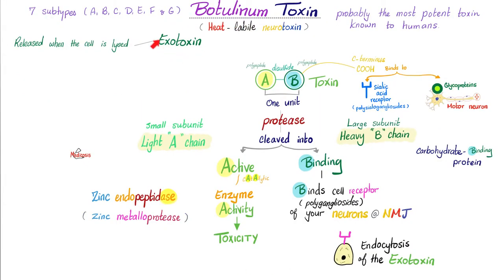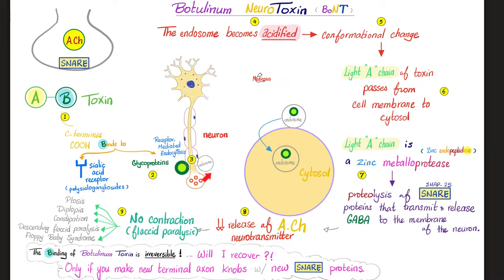Botulinum toxin is an exotoxin — a classic A-B toxin. The A subunit is active and has enzyme activity: zinc metalloprotease, which breaks down proteins such as SNARE proteins, particularly SNAP-25, which is part of the SNARE family. Without SNAREs, you are unable to release acetylcholine. No acetylcholine, no muscle contraction. Therefore: ptosis, diplopia, constipation, descending symmetrical bilateral flaccid paralysis, floppy baby syndrome, weak cry, hypotonia, etc.